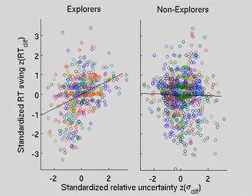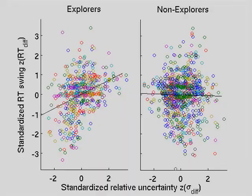There's another group of participants that also seem to adjust their responses on a trial-by-trial basis, but they just don't seem to do this in proportion to uncertainty. So this is what we call the non-explorers — or at least they're not using uncertainty to drive exploration.